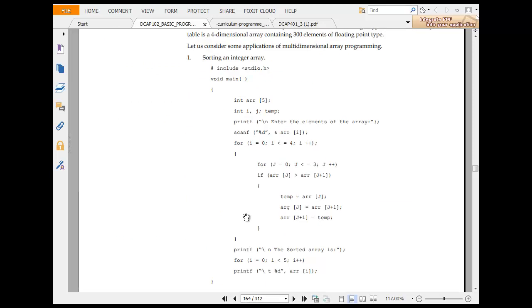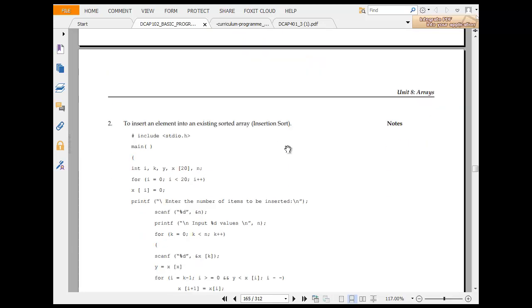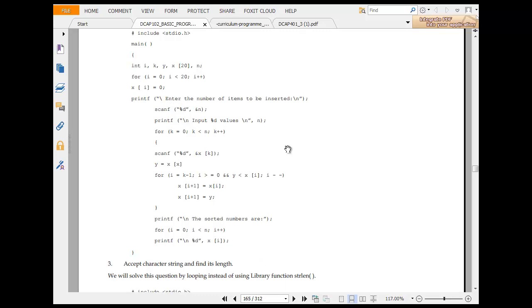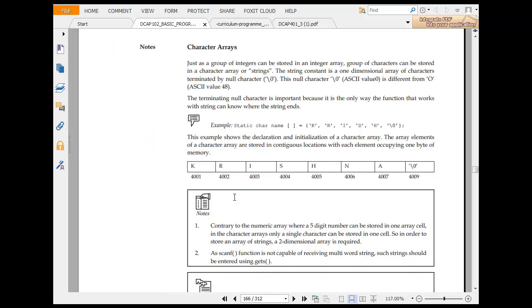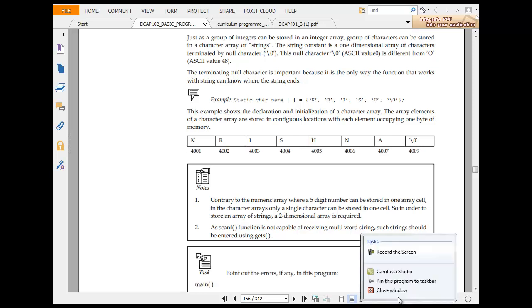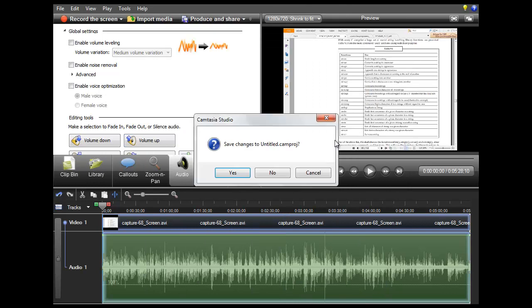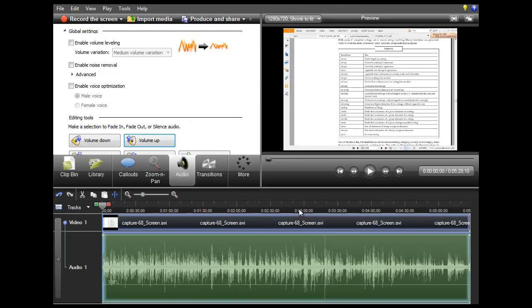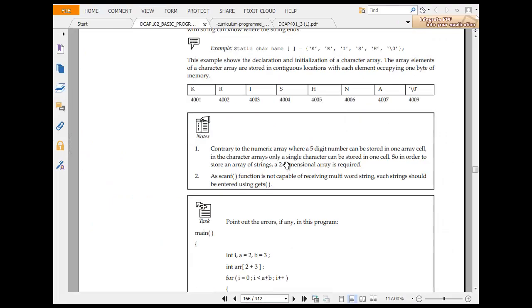You have multi dimension arrays. So include void main, scanf, slash t and then printf, scanf and so on. Then you have character array. Just as group of integers can be stored, group of characters can be stored in a character array. ASCII value has different value of 48. So remember that at the back end even these things are stored as arrays.